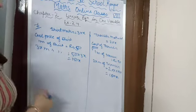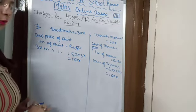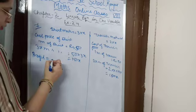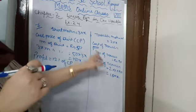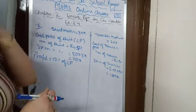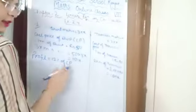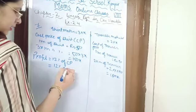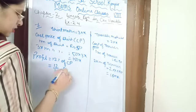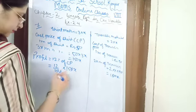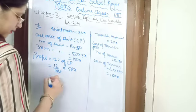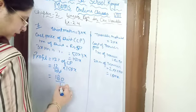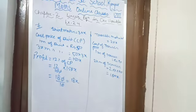Now we find the profit. Shirt is sold at 12% profit: 12/100 × 150X = 18X. Trouser is sold at 10% profit: 10/100 × 180X = 18X. So profit is 18X for both shirt and trouser.